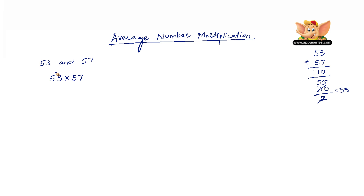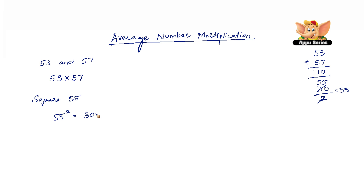To make multiplication simpler, we square 55. That is 55 squared is 3025.